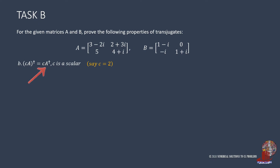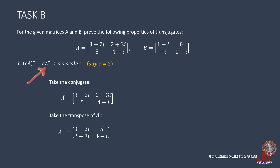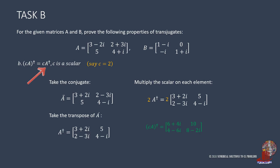Now proceed to the right expression, C times the transjugate of matrix A. First, take the conjugate of matrix A, so the elements undergo sign reversal: element 1,1 now has 3 plus 2i; element 1,2 has 2 minus 3i; element 2,2 has 4 minus i; and element 2,1 remains as 5. The next step is to take the transpose of bar A, which makes A dagger, with elements 3 plus 2i and 5 for the first row, then 2 minus 3i and 4 minus i for the second row. Multiplying A dagger by 2 gives elements 6 plus 4i, 10, 4 minus 6i, and 8 minus 2i — the exact elements from the left expression.